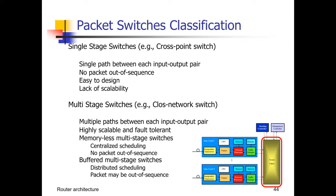Possible implementations inside the switching fabric circuit include multi-stage network architectures or a crossbar (single-stage cross-point switch). Large switching fabrics are usually implemented as multi-stage architectures. There is also always a control component that can be distributed or centralized.